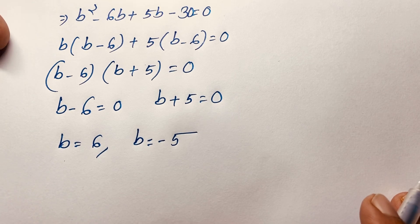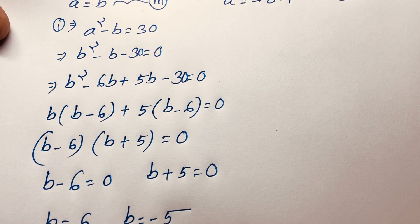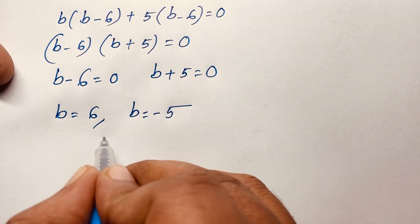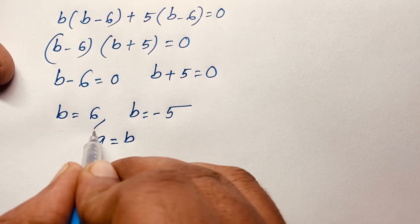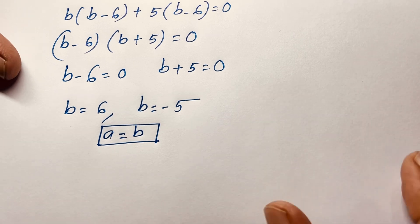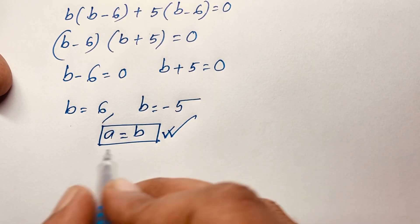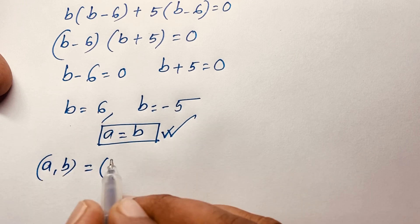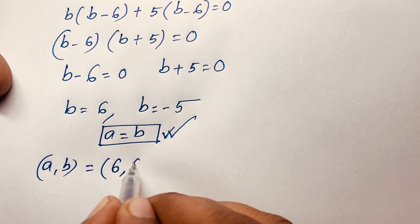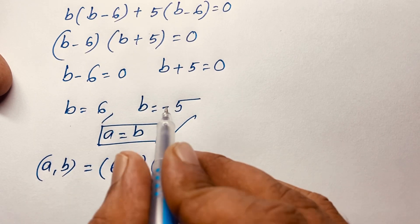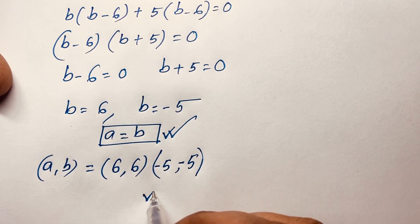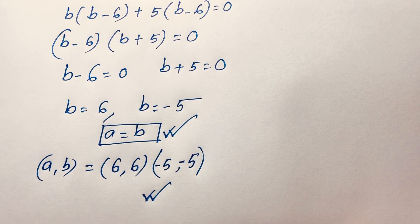Recall our third equation is A is equal to B. So according to this case, A and B are both the same. When B is equal to 6, this time A is equal to 6. When B is equal to negative 5, this time A is equal to negative 5. So this is our final answer for Case 1 of this Math Olympiad question.